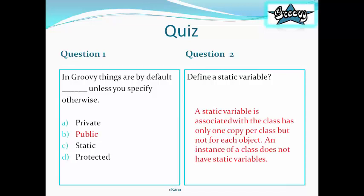The answer to question 1 is B. Public. And the answer to question 2 is a static variable is associated with a class and has only one copy per class, but not for each object. An instance of a class does not have static variables.